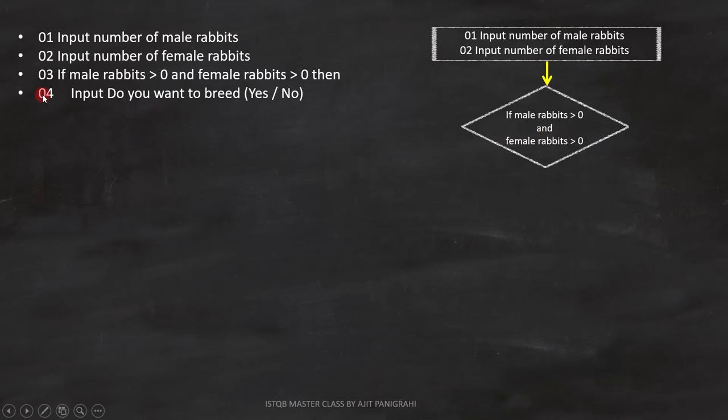Line 4 is input do you want to breed yes or no. This is a statement. We can represent it like this on the flowchart.